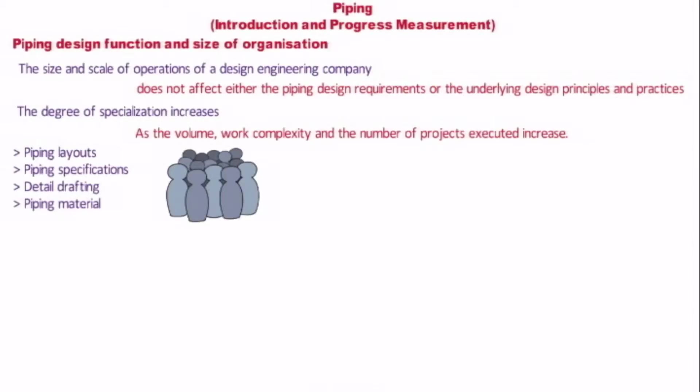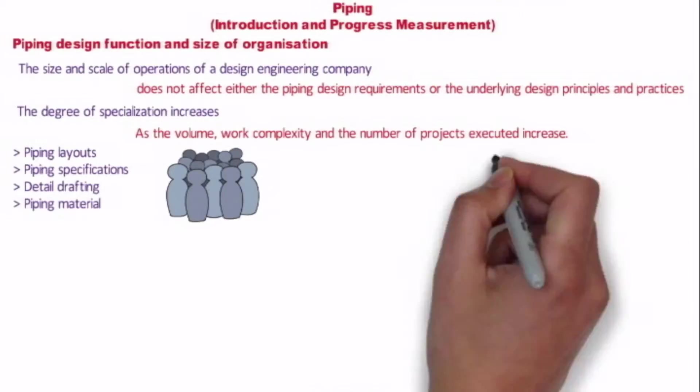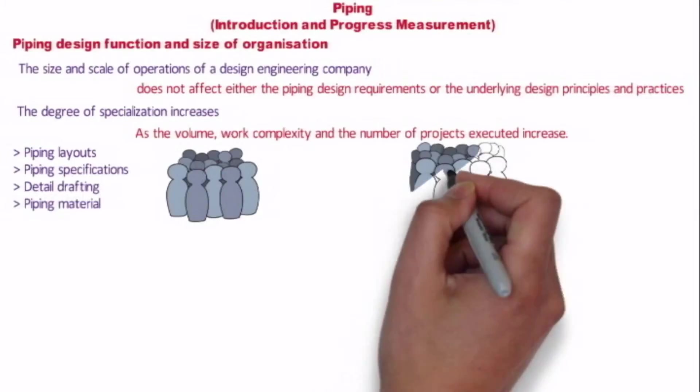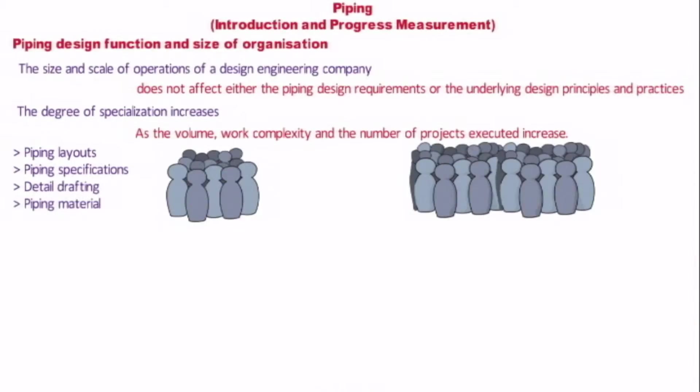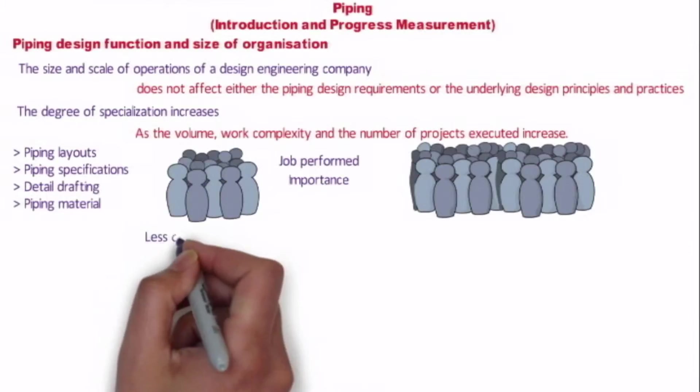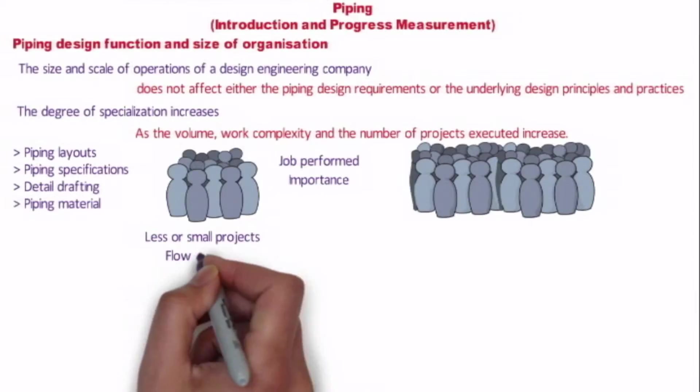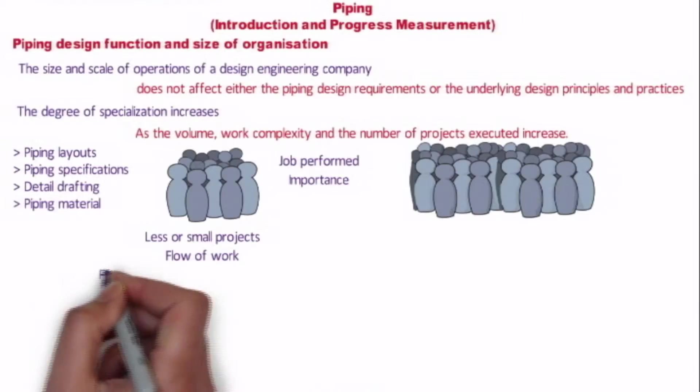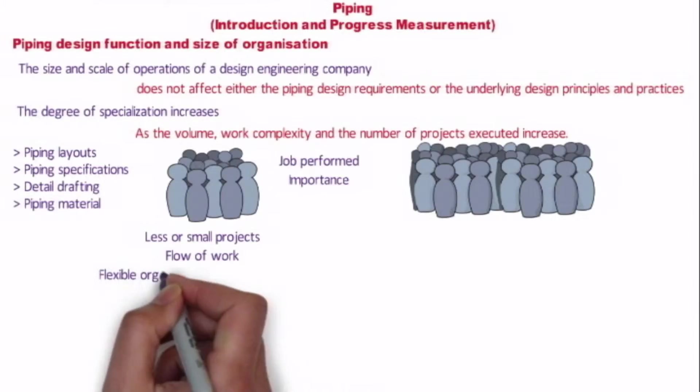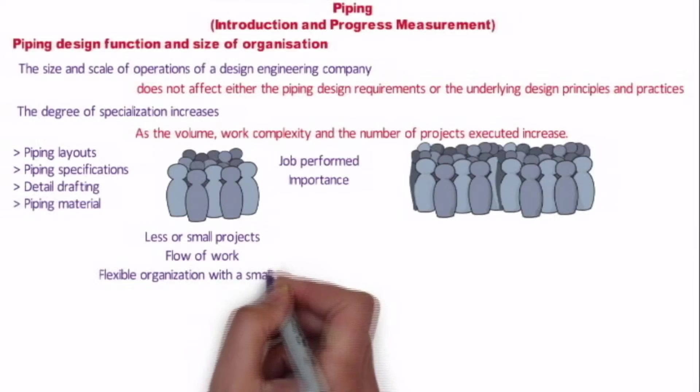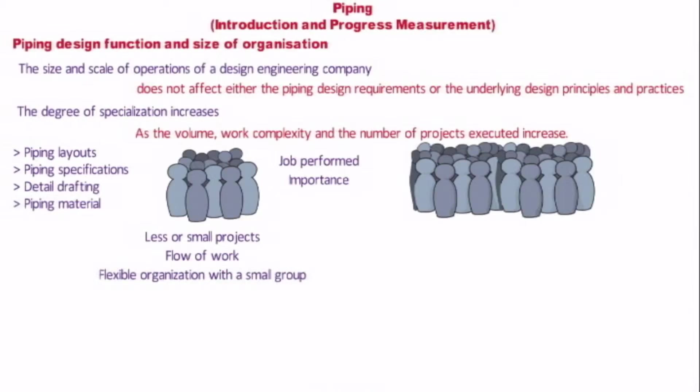There is little similarity between the piping design performed by a team of say 10 engineers from a small office and by large company having hundreds of piping engineers. The job performed in both the cases is identical and has the same degree of relative importance to the whole project design organization. The real difference lies in the number of projects handled by the design office. In a small office, the flow of work is such that each project is subsequently completed before the succeeding project commences. This requires a flexible organization within a small group who is responsible for all the aspects of design.